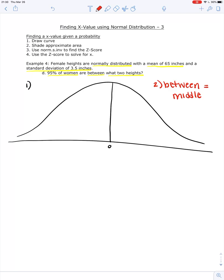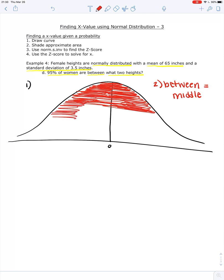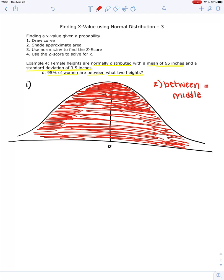Now, remember with a bell-shaped curve like this, one of the ways that we can describe this is that it is symmetric, meaning it's even on both sides. So if I'm shading 95% of my curve and it's in the middle, I'm going to shade the same amount below the curve as I do above the curve. So I'm going to start shading. 95% is going to be almost all of it. It's going to be a lot of it.